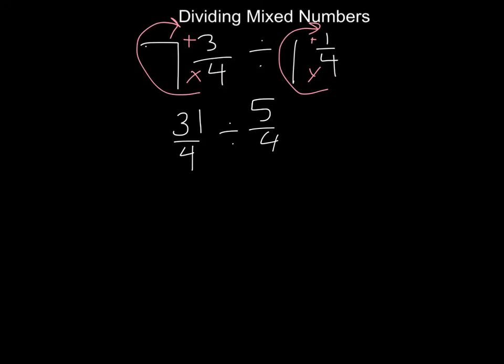So we're going to keep our first fraction 31 over 4, we're going to change to multiplication, and we're going to flip to our reciprocal which is just the reverse, 4 over 5.